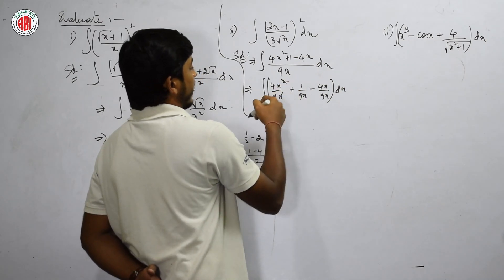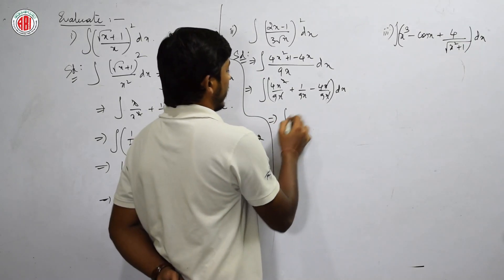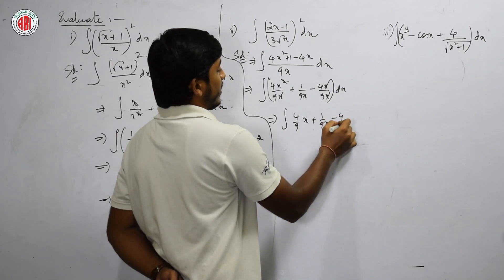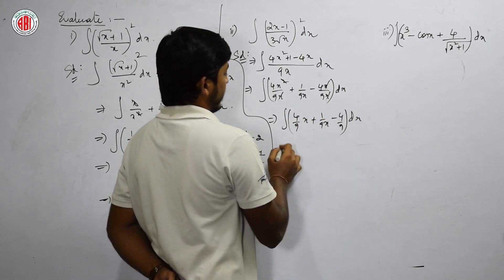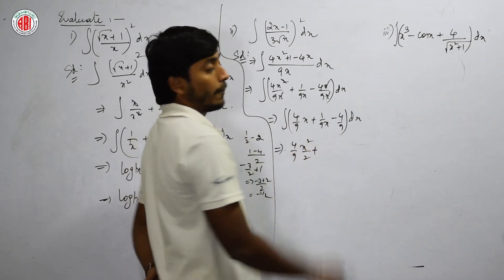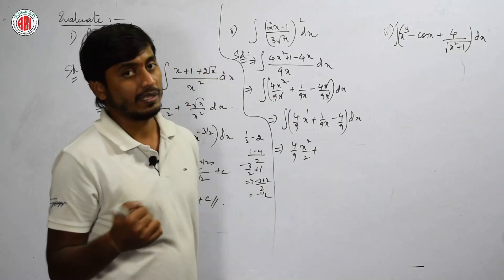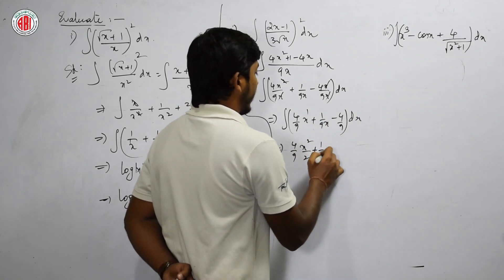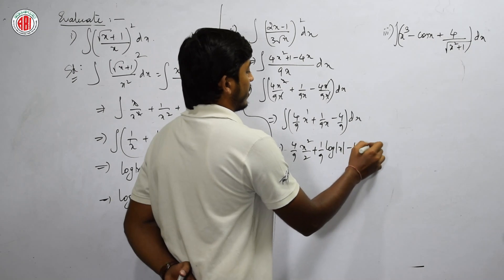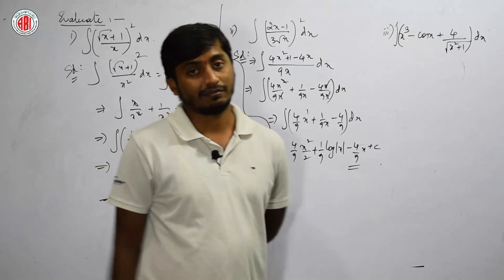Simplify by cancelling x terms: we get ∫(4x/9 + 1/(9x) - 4/9) dx. Now integrate each term: 4/9 · ∫x dx = 4/9 · x²/2; 1/9 · ∫(1/x) dx = 1/9 · log|x|; and -4/9 · ∫1 dx = -4/9 · x. You can take LCM or leave it as is.